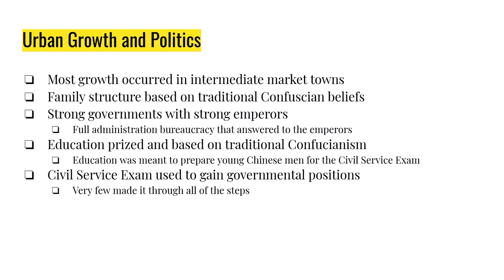Most of the growth in China occurs in market towns — intermediate-sized towns linking big cities to small agricultural villages. Family structure is strongly based on Confucian traditions: women were expected to obey men, men knew their place in society, and everybody followed the rules. Women were physically restricted, and the practice known as foot binding became common. If you've never looked up foot binding before, go ahead and do it — it's pretty gross.